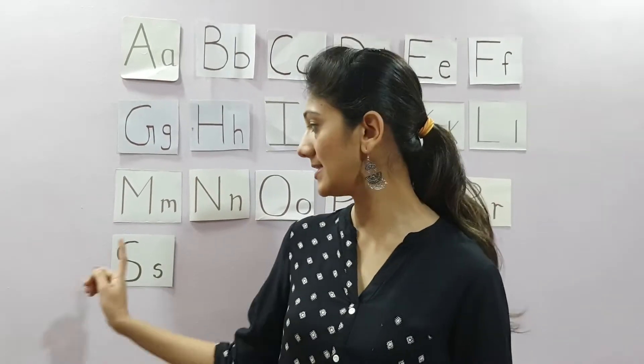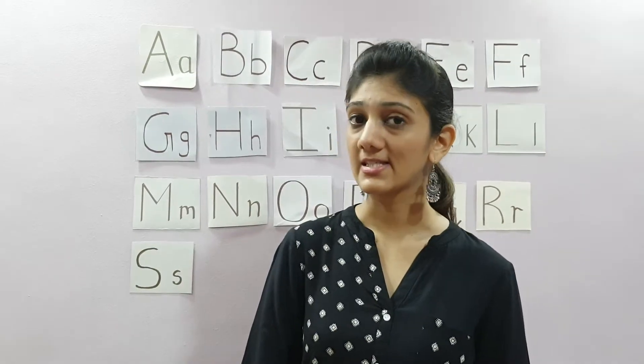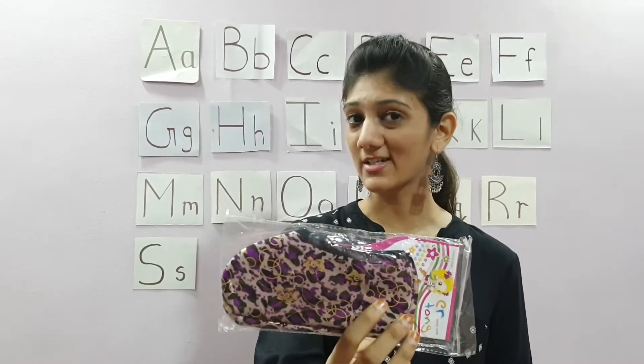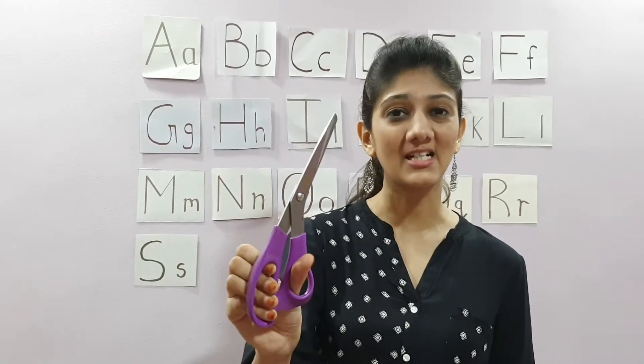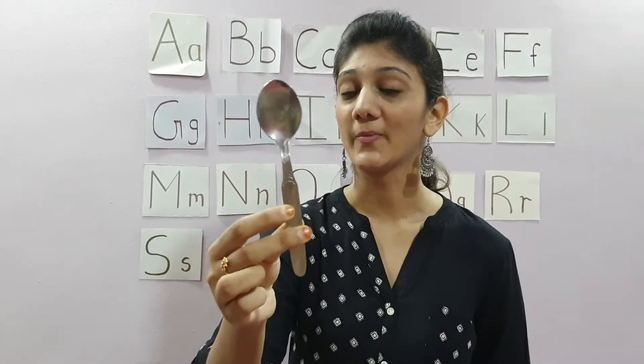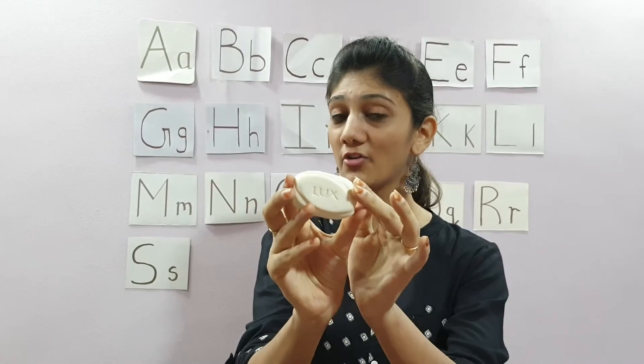The letter we are learning is letter S. I am going to show you some objects which start with the letter S and the sound S. Socks. The next object is scissors. Scissors. Say with me. And after that we have S-S-S-Spoon. And the last object for today is S-S-S-Saw. Do you regularly wash your face and your hands with the soap?